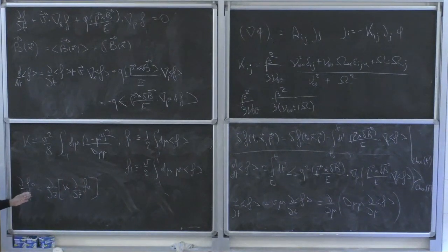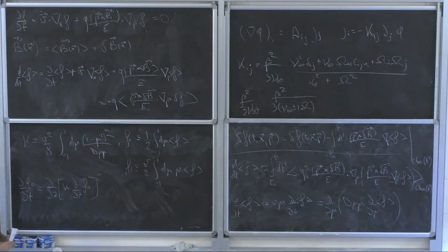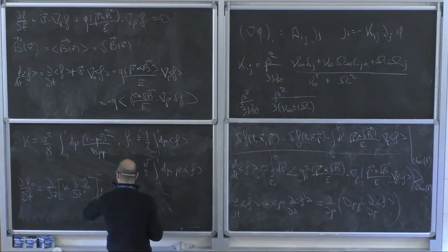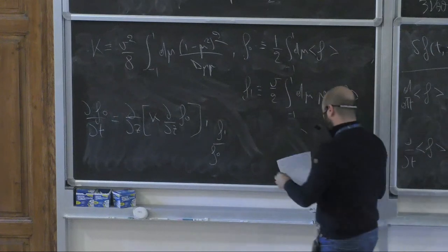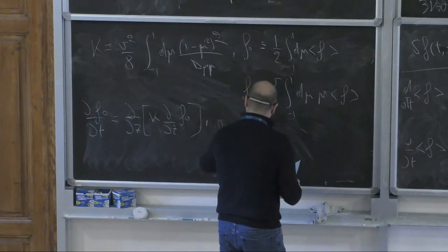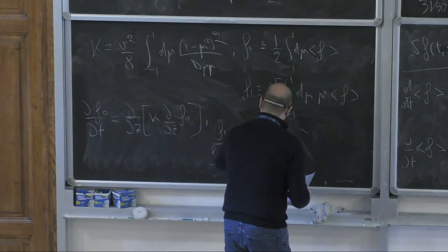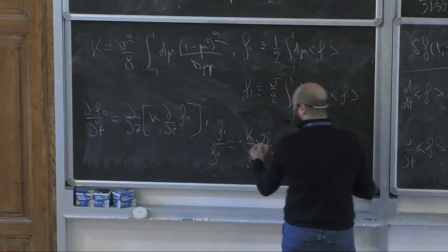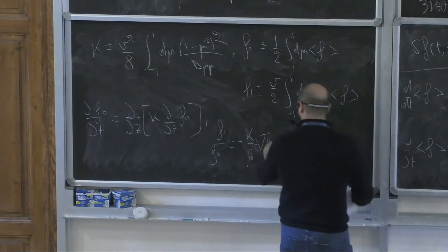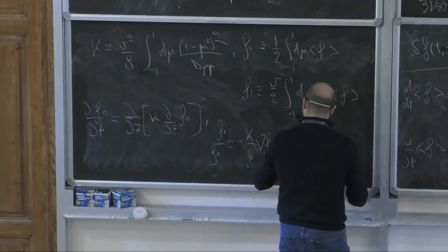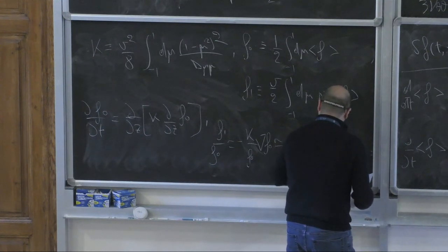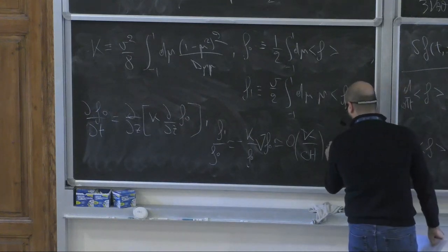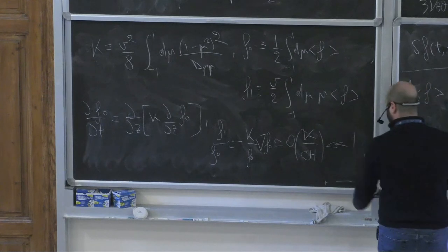With this formalism, you can prove quite easily that the ratio f₁/f₀ — the first moment to the zeroth moment — is basically −(κ/f₀) ∇f₀. If you have a diffusion region of thickness H, a qualitative estimate of this ratio is of order κ/(cH). Plugging in specific numbers, this is much smaller than one. So in this approach, you can prove that the multipolar expansion makes sense.